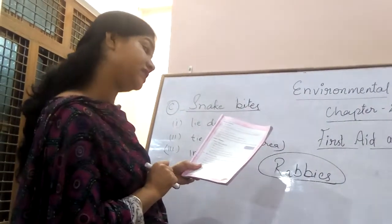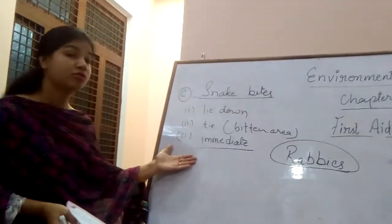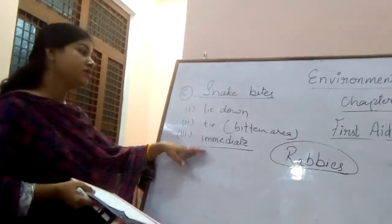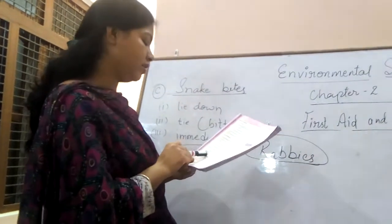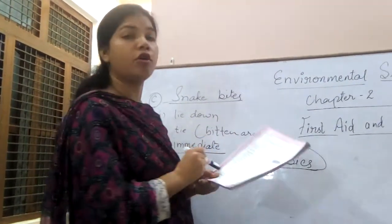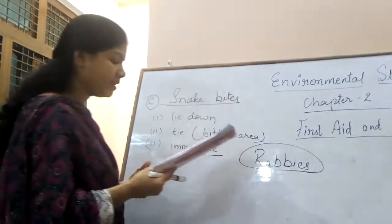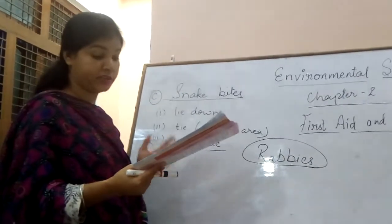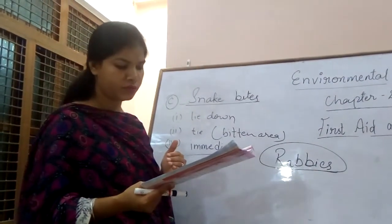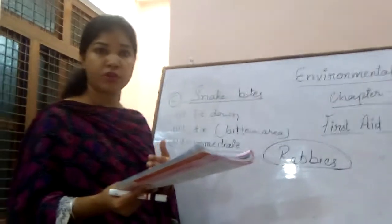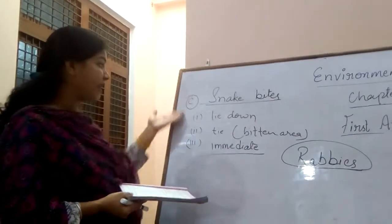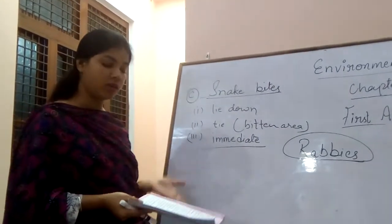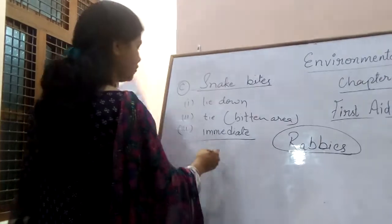Next: name one disease caused by animal bites. When a dog bites and you are not getting proper treatment, the disease caused is rabies. Why should the victim lie still in case of snake bites? So that the blood cannot be sent to the heart and the spreading of poison is stopped immediately. In true or false: in case of snake bites the patient should not be taken to the doctor — this is false, because we cannot treat the patient at home; we need a doctor.